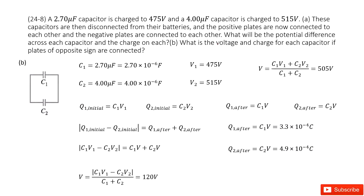The next part asks for the voltage and charge for each capacitor if the opposite sides are connected — meaning for capacitor C1, the positive side is now connected to the negative side of C2, and the negative side of C1 is connected to the positive side of C2. So the charges are in opposite directions.